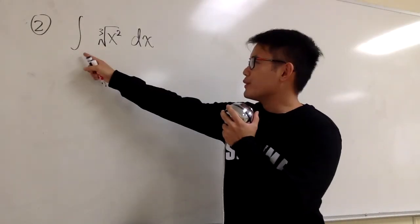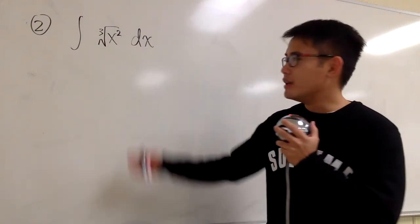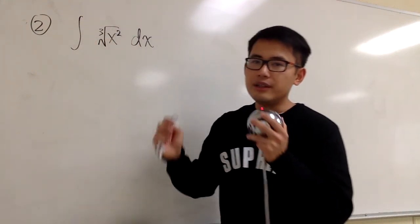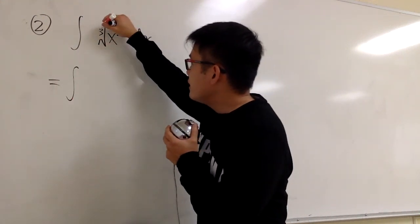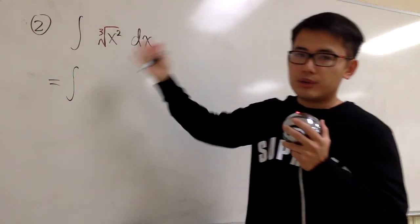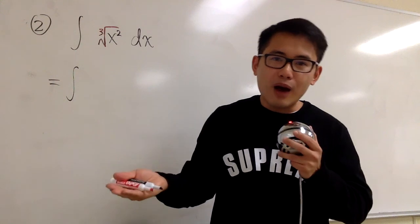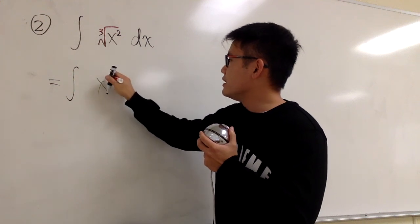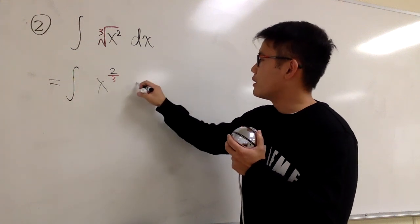Here's the second example. We are going to integrate the cube root of x to the second power, dx. How can we use the reverse power rule here? We can only use it if we rewrite this expression into its power form. Every time in calculus, whenever we look at a root, we write it as the power form. The cube root means the third power, so we are going to have x to the second over 3 power. So we are going to integrate x to the 2/3 power, dx.